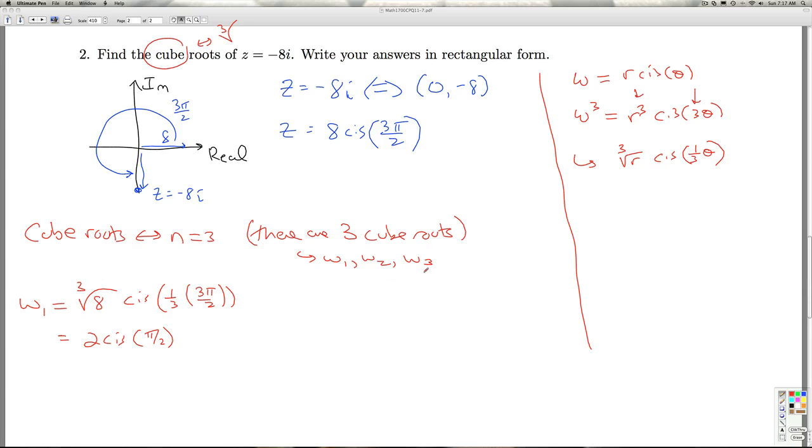Now how do I get W2 and W3? You've got to remember these are evenly spaced throughout the circle. So the entire circle you've got 2 pi radians there. And since I've got three of them evenly spaced, they're each 2 pi over 3 radians apart.